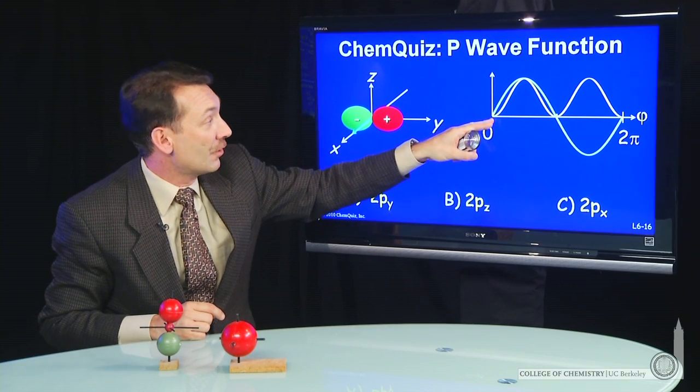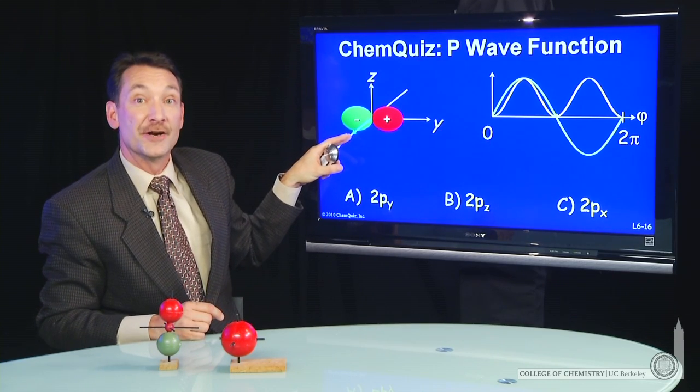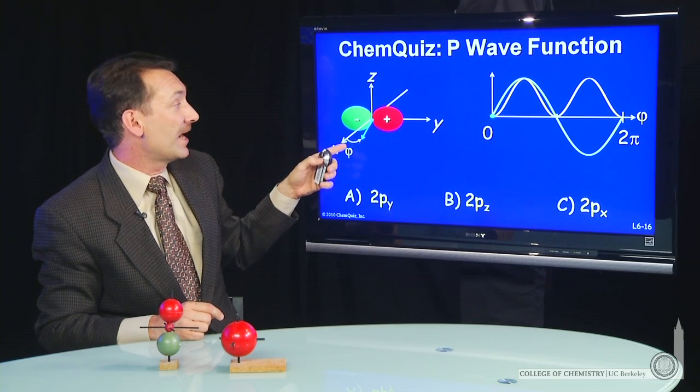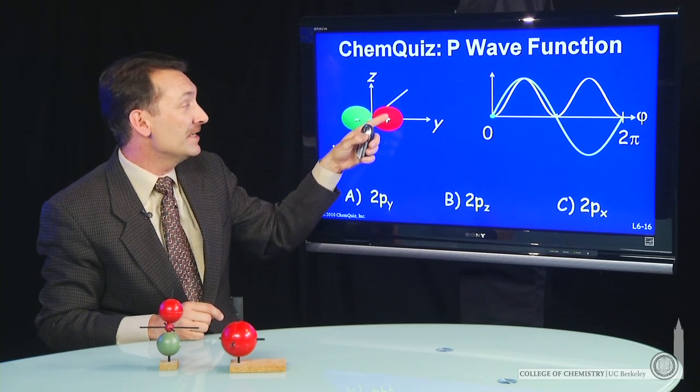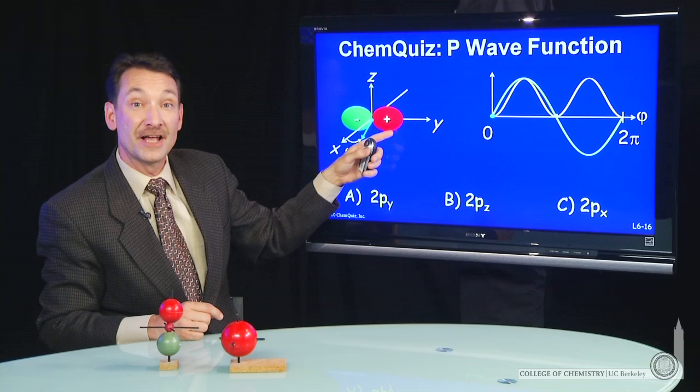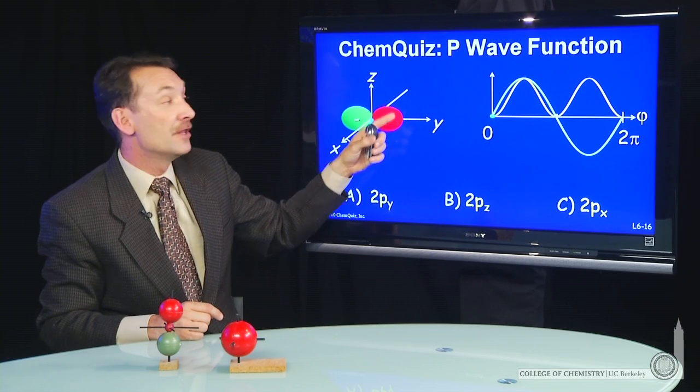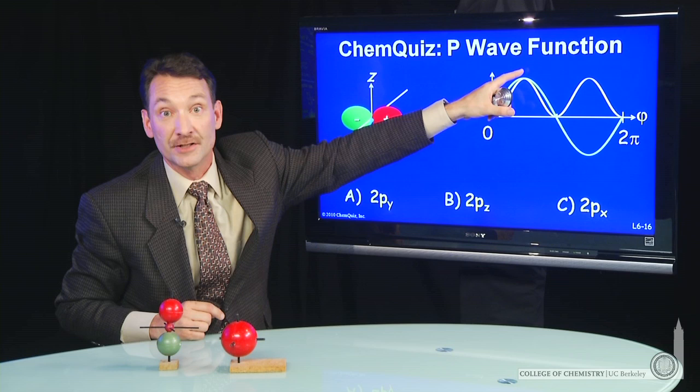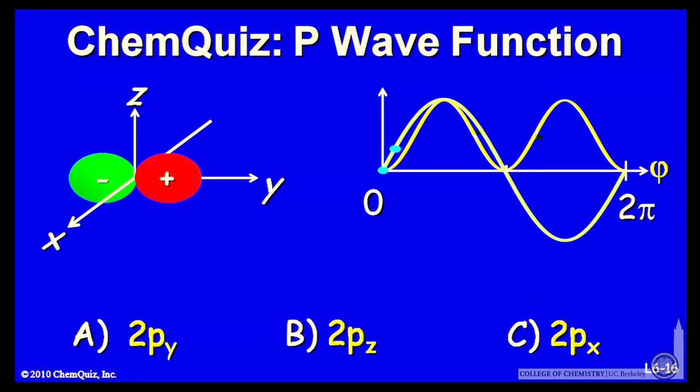The wave function is 0 for values of phi that are equal to 0. If I let phi get bigger, what I'll find is I'll start to sweep into these positive values of the wave function. The wave function should go positive. The square of the wave function, of course, is always positive.